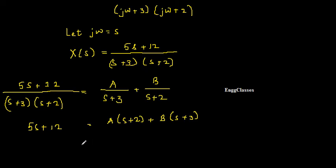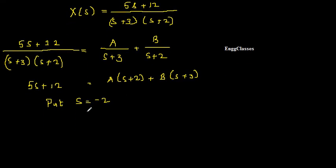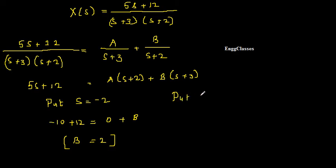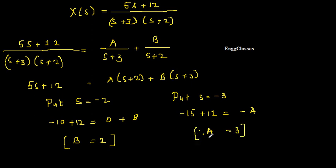To find B, put s = −2: 5(−2) + 12 = −10 + 12 = 2 = B·(−2 + 3) = B·1, so B = 2. To find A, put s = −3: 5(−3) + 12 = −15 + 12 = −3 = A·(−3 + 2) = −A, therefore A = 3.